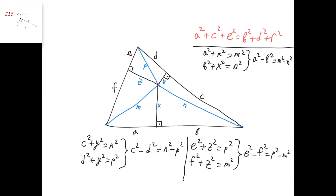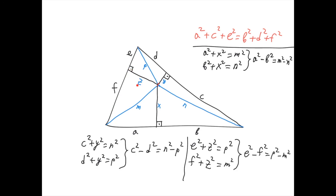And when we apply it in the same way for this triangle and this triangle, z² cancels out, and we get e² − f² = p² − m².